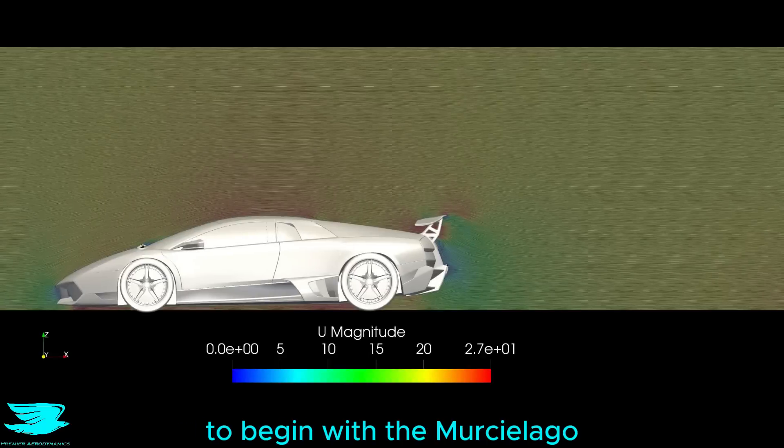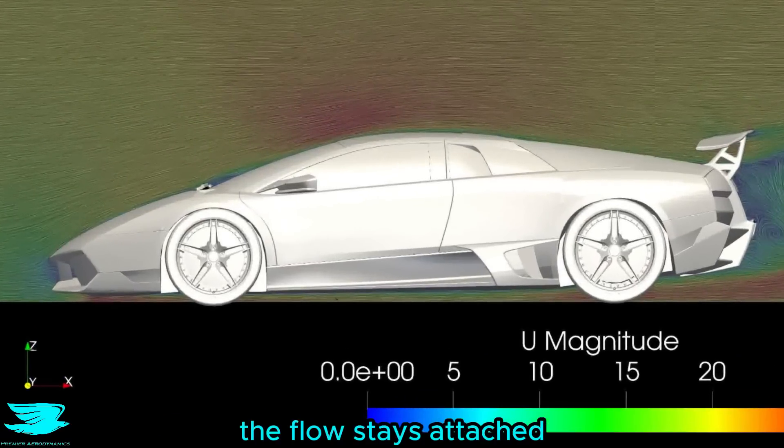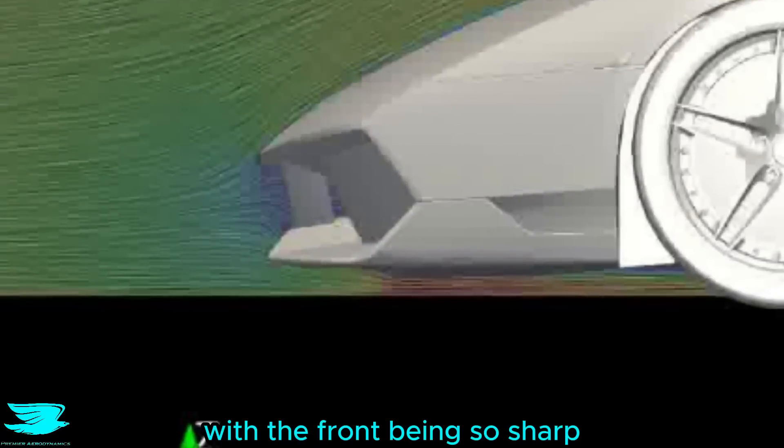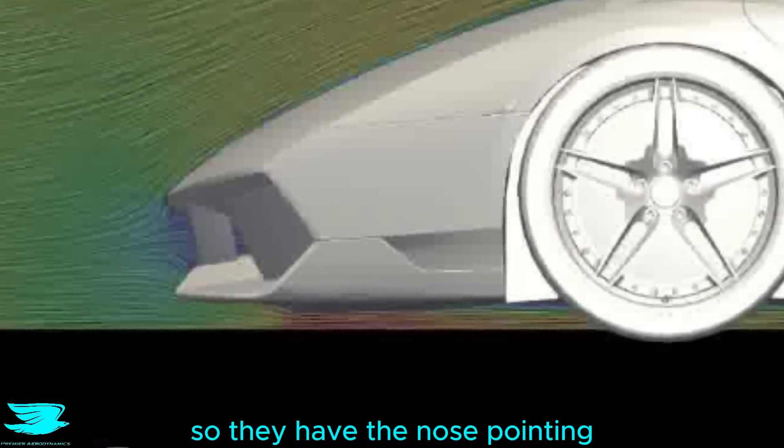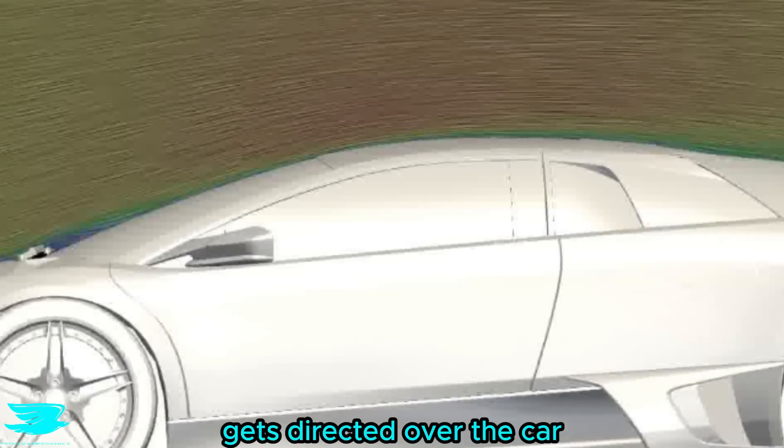To begin with, the Murciélago was quite impressive because even though it was fairly aggressive, the flow stays attached along pretty much the entire car. With the front being so sharp, it pierces the flow and the way they designed it, there is a trade-off happening here. They had the nose pointing down dramatically, which means that most of the flow gets directed over the car, and only a little gets directed under the car.